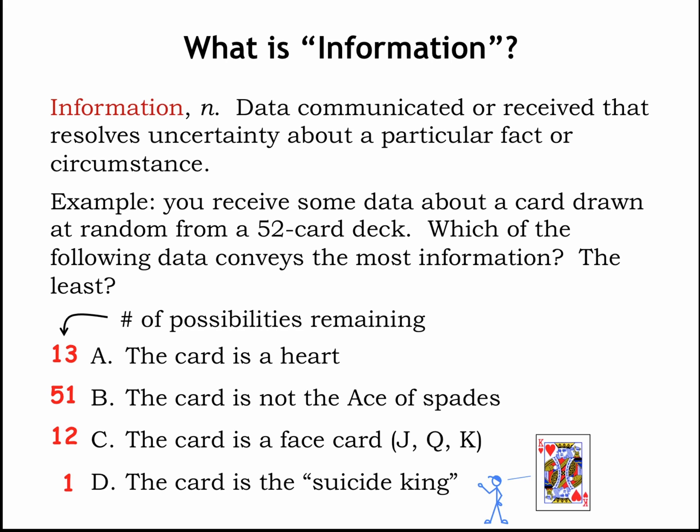Which of the possible pieces of data conveys the most information? In other words, which data resolves the most uncertainty about the chosen card? Similarly, which data conveys the least amount of information? Before we talk about the mathematics behind the correct answer to these questions, vote for your answers in the following poll.